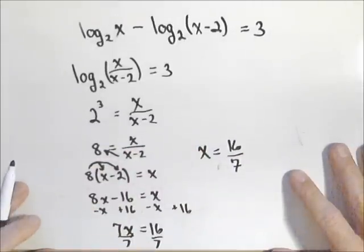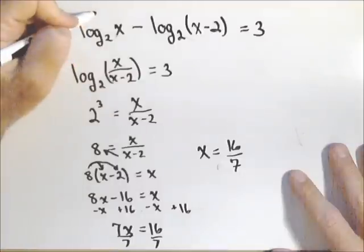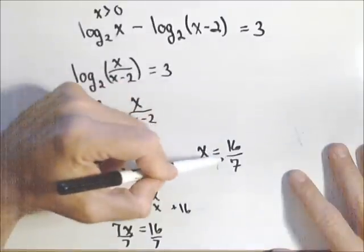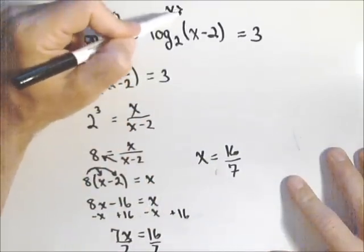And it is a good habit to always check our answers, because log does have a domain restriction. You can't take log of zero or a negative number. So the domain of this first one is that x has to be greater than zero, which it is. The domain of this second one is that x has to be greater than two.